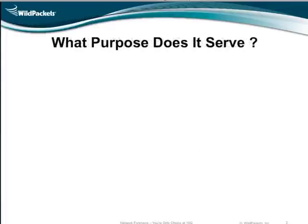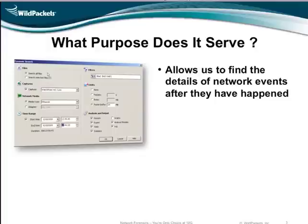Moving on to the next slide, covering what purpose does it serve. It does allow us to find the details of network events after they happen — which, for 10-gig networks, is essential nowadays. Very difficult to reproduce things. And in many cases, you don't want to try and reproduce things. There's already so much data on the network. The last thing you want to be doing is putting more data on the network trying to recreate a problem. So it allows us to see those things after the fact.